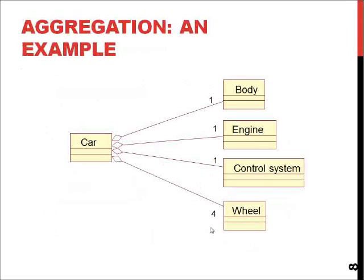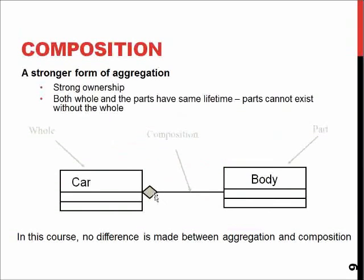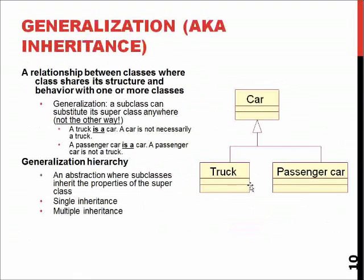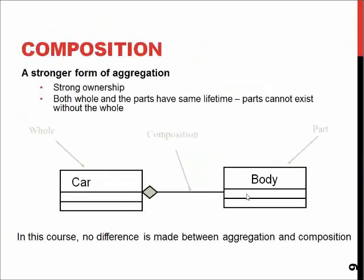You may have more or fewer wheels in some cases. Composition is a stronger form of aggregation. In some programming languages, if we have composition, destroying the body destroys the car. But with aggregation, if we destroy the body, the car still exists — it's just the engine, control system, and wheels.